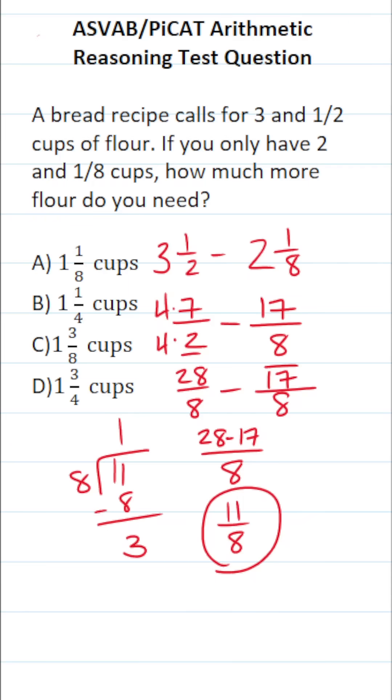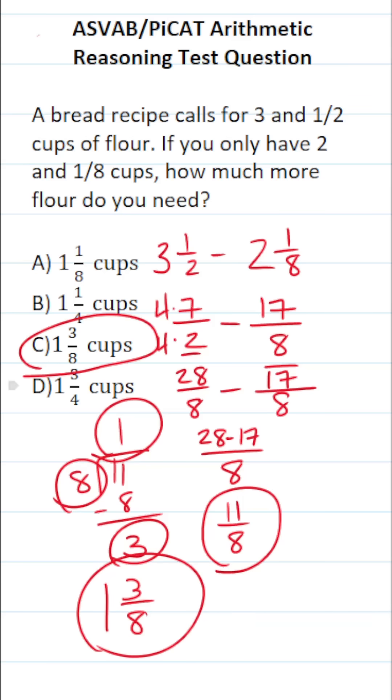And just like that, we have enough to write our mixed number. This one is going to be our whole number. This remainder of three is going to be our numerator. And this eight is going to be our denominator. So to answer this question, you need one and three-eighths cups more of flour for the bread recipe.